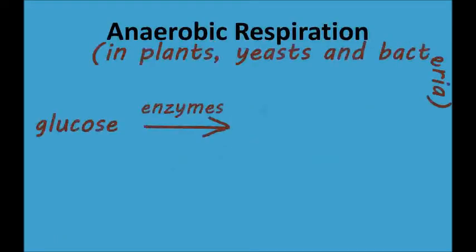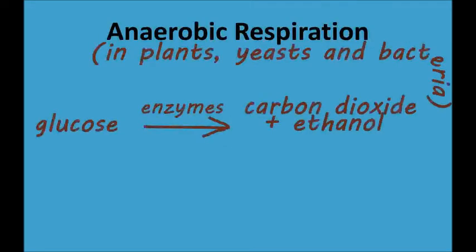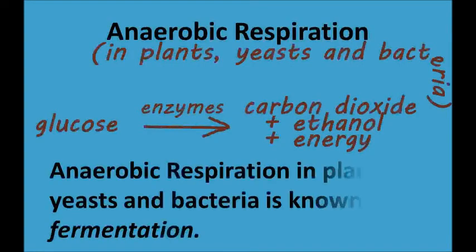Let's look at the equation for anaerobic respiration in plants, yeasts and bacteria. The enzymes that these organisms use for anaerobic respiration are different to the ones in animal cells, and they rearrange the atoms in glucose in a slightly different way. Instead of producing lactic acid, we end up with carbon dioxide and ethanol, which is a type of alcohol. This type of anaerobic respiration is also known as fermentation. This is the chemical process that is used to make bread rise, put bubbles in beer and champagne, and to make beer and wine alcoholic.